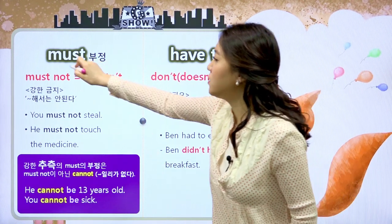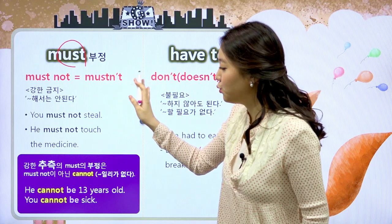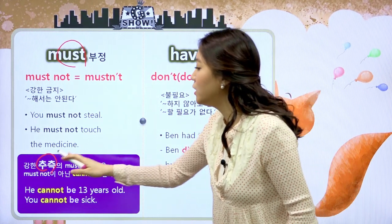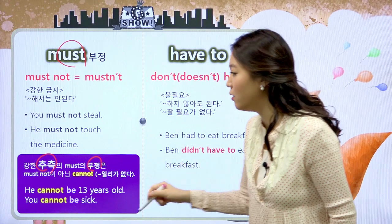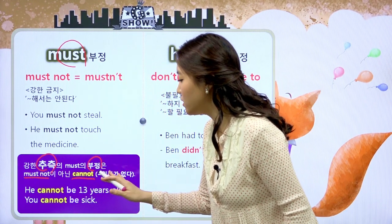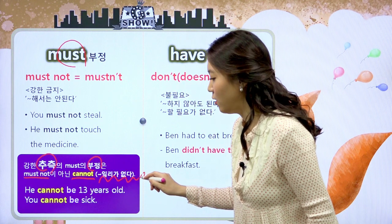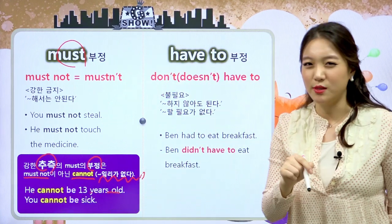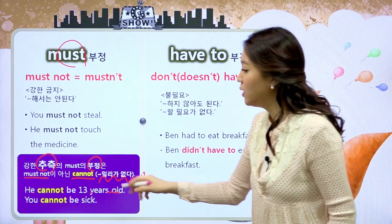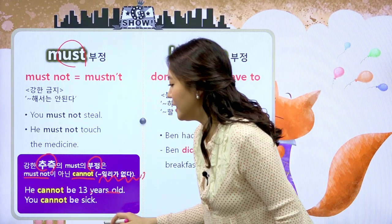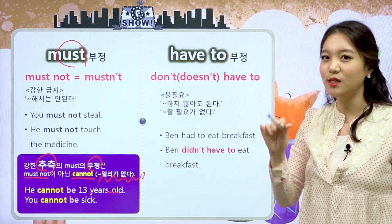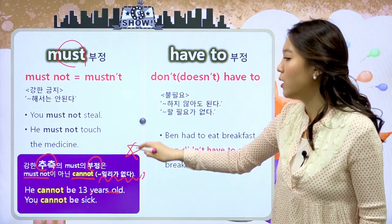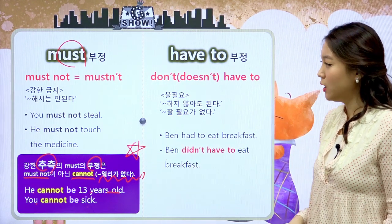여기서 must는 의무의 뜻도 있었지만 강한 추측의 의미도 있었어요. 뭐뭐임에 틀림이 없어라는 뜻을 가지고 있는데 그럴 경우 부정이 달라져요. 추측일 때는 must not이 아니라 cannot이 됩니다. 즉 해석은 뭐뭐 일리가 없다라고 해석이 돼요. 'He cannot be 13 years old' 하면 그는 13살 일리가 없어. 'You cannot be sick' 하면 너는 지금 아플 리가 없어라고 강한 추측의 부정에는 cannot을 사용한다는 거 우리 친구들 정말 많이 헷갈리는 내용이니까 잘 기억해주셔야 합니다.